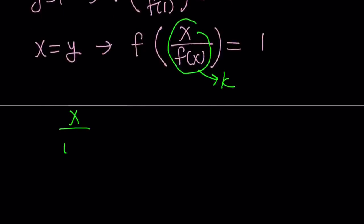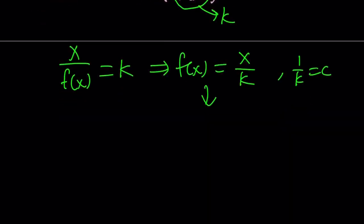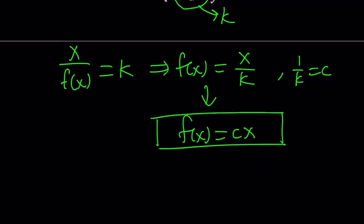So we're going to get x over f of x equals a constant k. And from here, f of x is just going to be x over k. But I don't like that. I want to turn this into a more linear looking form. How about setting 1 over k equal to c? And hopefully you see what I see. You're going to get f of x equals cx.